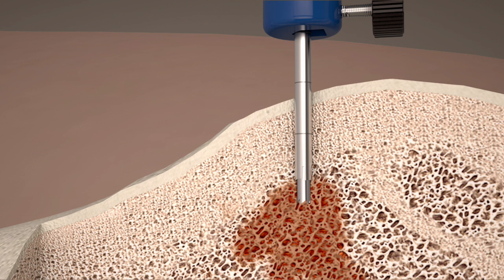The sharp, durable trephine teeth of the biopsy needle core both sclerotic and lytic lesions. Once the desired depth is reached, the biopsy needle is turned counterclockwise for several rotations to sever the bone fibers and release the specimen into the needle.